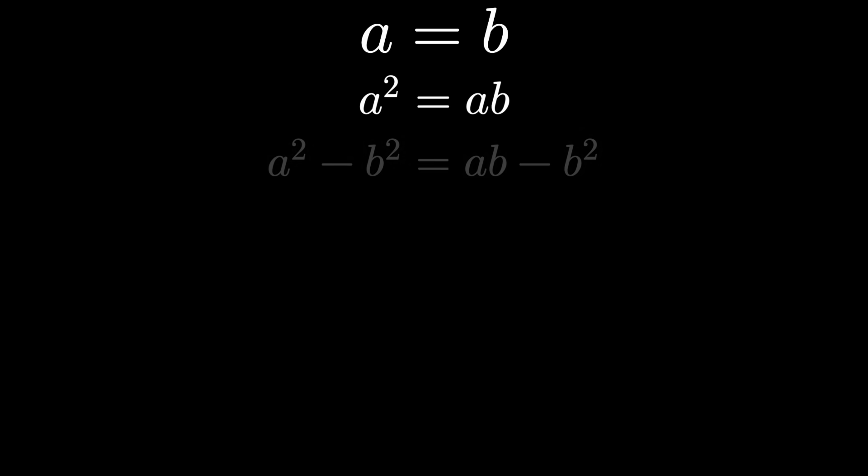Next, subtract b squared from both sides, so we can factor both sides. On the left we have a difference of squares, and on the right we have a greatest common factor of b, we'll just pull that out.